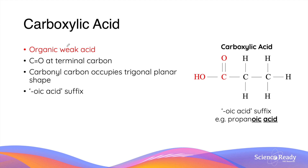Carboxylic acids are organic weak acids. Structurally, the carboxylic acid functional group also contains a carbonyl group — a carbon-to-oxygen double bond. Like aldehydes, the carbonyl carbon is located at the terminal end of the molecule, bonded to another carbon atom and, more importantly, an OH group. The carbonyl carbon occupies a trigonal planar shape as it is connected to three other atoms. The bond between the oxygen and hydrogen atom in the carboxylic acid functional group is weakened due to oxygen's high electronegativity, enabling the hydrogen atom to be deprotonated very easily, which explains why carboxylic acids are acidic in nature.